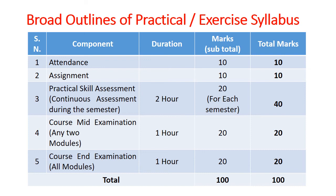The practical skill assessment is distributed across two semesters — semester three and semester four for regular students. The assessment is two hours long with a total weightage of 24 marks in each semester, and a grand total of 40 marks for both semesters combined. The course also has a mid-semester exam based on any two modules taught during the first semester, with a total weightage of 20 marks and a one-hour duration.